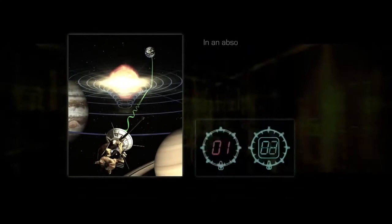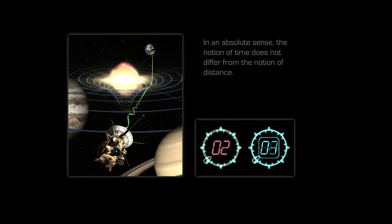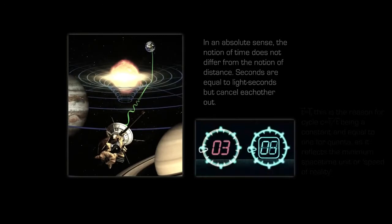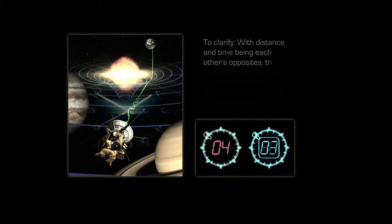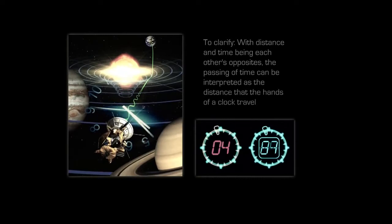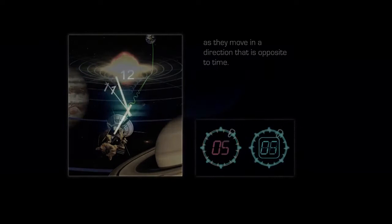In an absolute sense, the notion of time does not differ from the notion of distance. Seconds are equal to light seconds, but cancel each other out. To clarify, with distance and time being each other's opposites, the passing of time can be interpreted as the distance that the hands of a clock travel as they move in a direction that is opposite to time. As they move forward in distance, they effectively travel backwards in what we would call time. This is also why any single separate minimum unit of experience is always instantly annihilated within a timeless now. This understanding sets the record straight between wavefunction collapse and quantum decoherence.